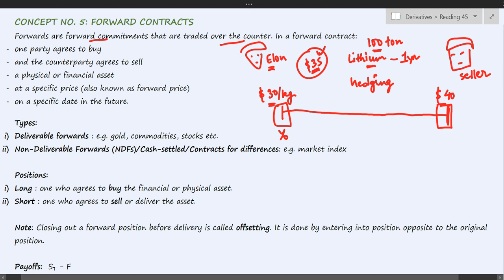Coming to one year later, what happens? Let's say the prices of lithium has actually risen to $40. In that case, no matter what is the price in the market, Mr. Elon has to pay $35 per kg and he can buy this entire quantity at this price only. So he will make the payment and receive the goods from the seller. This is the situation of a deliverable forward where the seller is actually delivering the goods he has promised for.